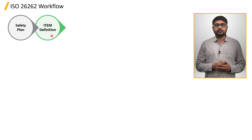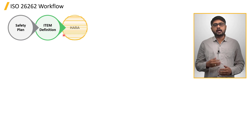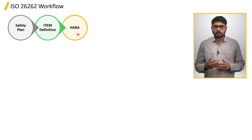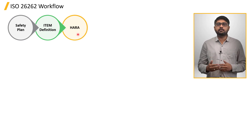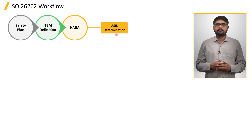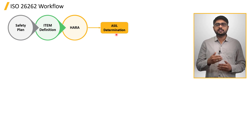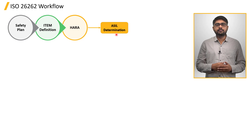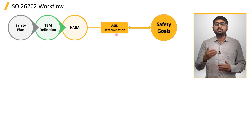the item needs to be defined. Following that, Hazard Analysis and Risk Assessment is performed to determine the ASIL levels. For each hazardous event assessed in HARA, a safety goal is established.